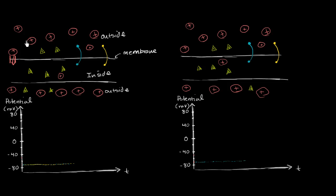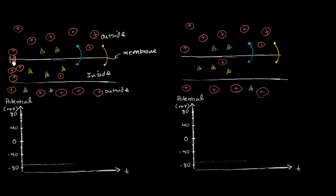Sodium floods through for two reasons. One, it is a positive ion — it's more positive on the outside than the inside, so positive charge will want to flood in. The other reason is because there's a higher concentration of sodium on the outside than on the inside, so it'll go down its concentration gradient. This is because of the sodium-potassium pump.